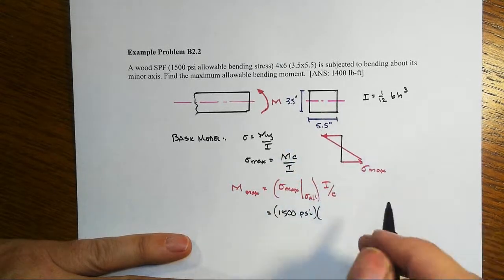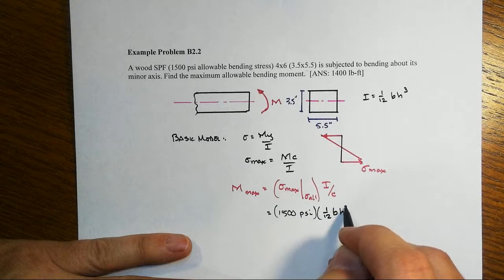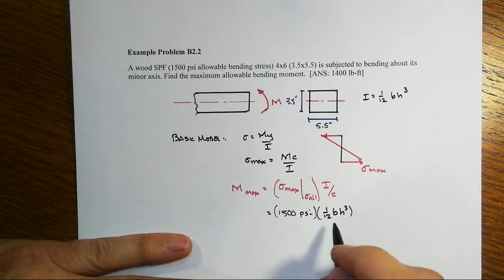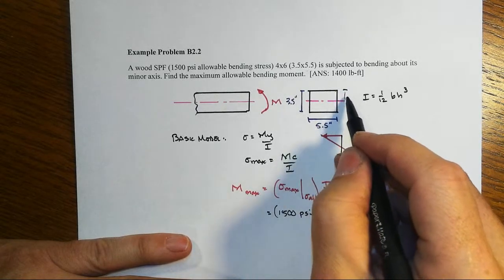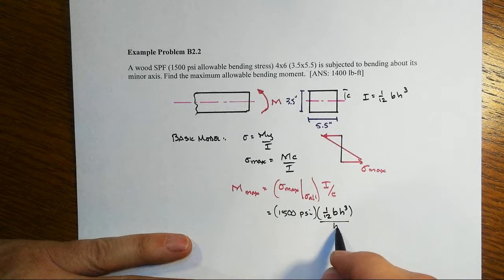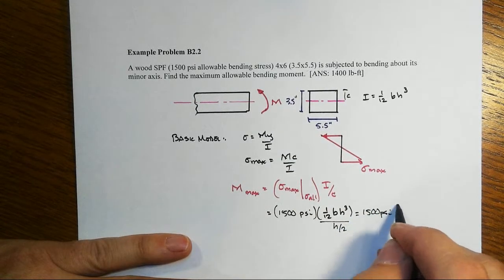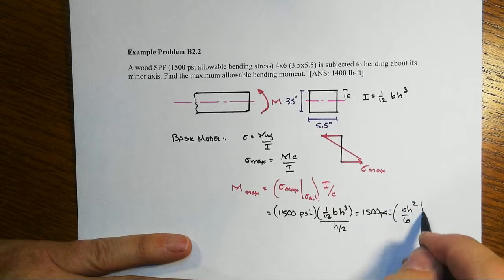That maximum has been given to us as 1500 psi. Our I value will be 1/12 of the base times the height cubed. I left it symbolically because I'm going to divide that by c, which is half of the height. Note what happens: that's 1500 psi times bh squared over 6.